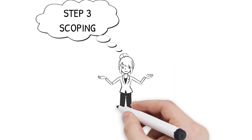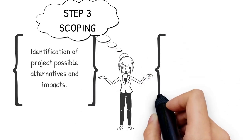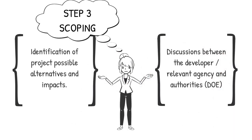Step 3 is Scoping. There are two elements required in this step. Firstly, identification of project possible alternatives and impacts. Secondly, discussions between the developer or relevant agency and authority such as the Department of Environment. Change of specific land space and other alternatives can be employed at this stage.